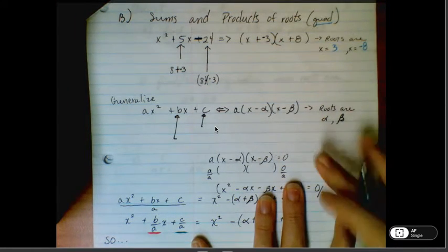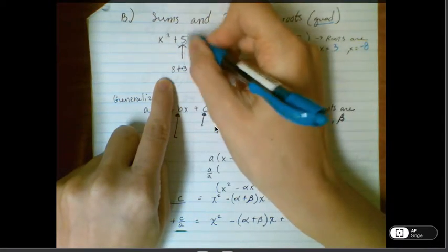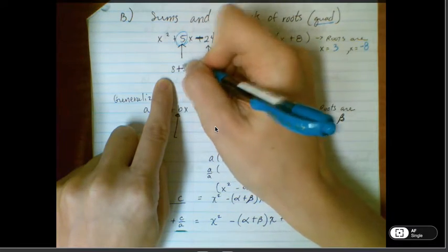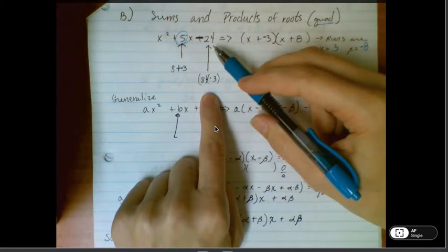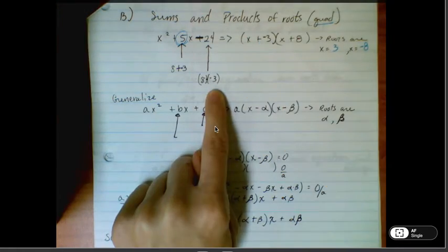So when we look back at our original function, you can see that 5 is the sum of 8 and negative 3, and 24 is the product of 8 and negative 3, so that's supposed to be negative 24.